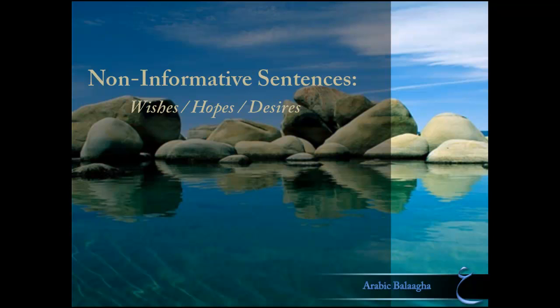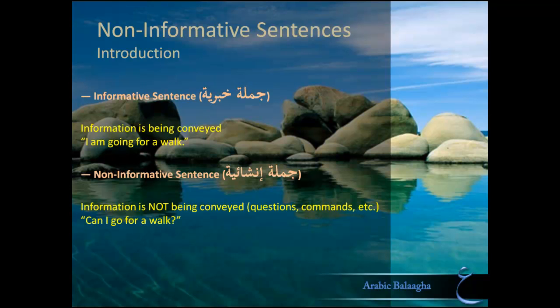In today's lesson on Balagha, we're moving on to the next chapter about non-informative sentences, and we'll start by talking about expressions of hope and desire. As you probably know, Arabic sentences can be divided into informative and non-informative sentences. An informative sentence is one in which information is being conveyed — like, 'I'm going for a walk.' We call this a jumlah khabariyya.